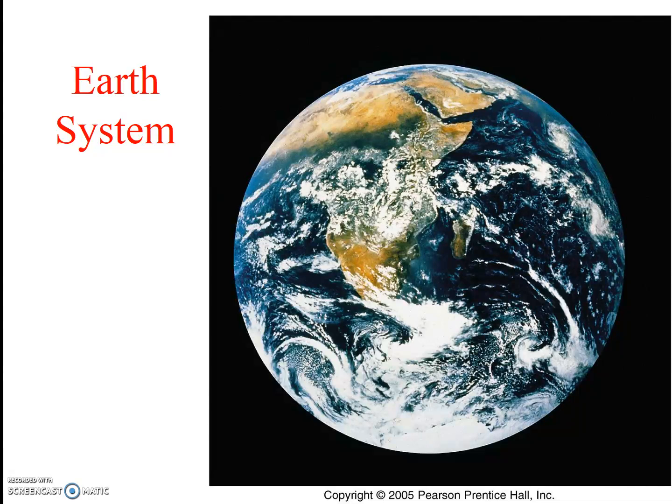We all intuitively know that the Earth is complex. We know that it is composed of many components, for example, plants, animals, rocks, water, air, etc., and that there are many processes, for example, plate tectonics, precipitation, volcanism, erosion, decomposition, etc., that connect and change these components.